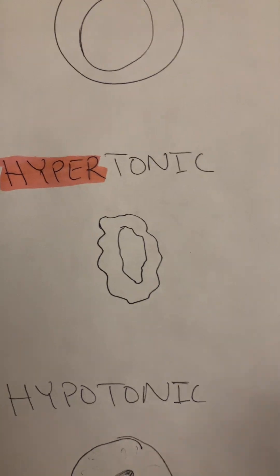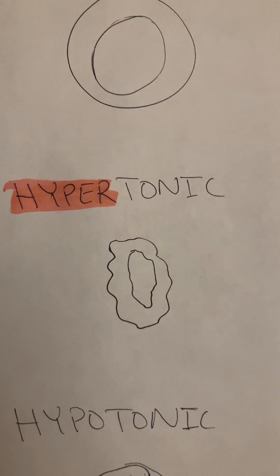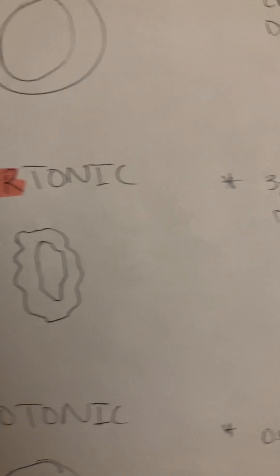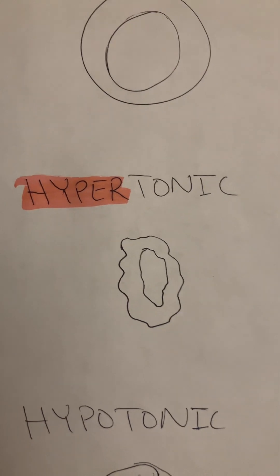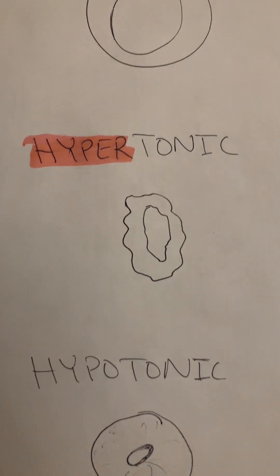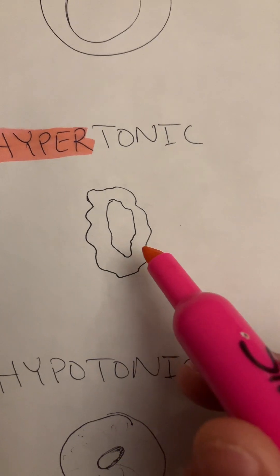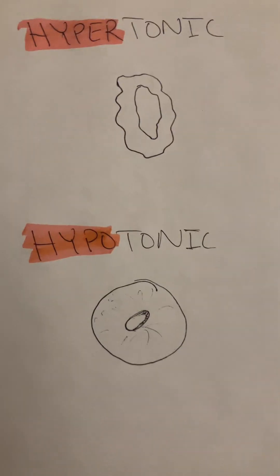A hypertonic solution is actually going to draw fluid out of the cell, causing it to be shriveled and skinny. This includes things like 3% saline and D10W. You can imagine that hyper friend who's always moving around and is really, really skinny — that's how you can remember that one.